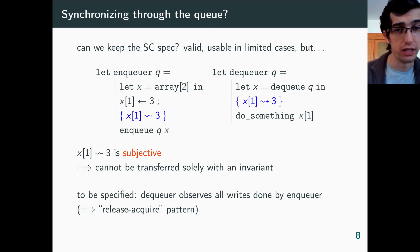From the logical perspective, the user wants to transfer points-to assertions from A to B, but as I said, points-to assertions are subjective. So the user cannot simply put them in an invariant, and we need something more.